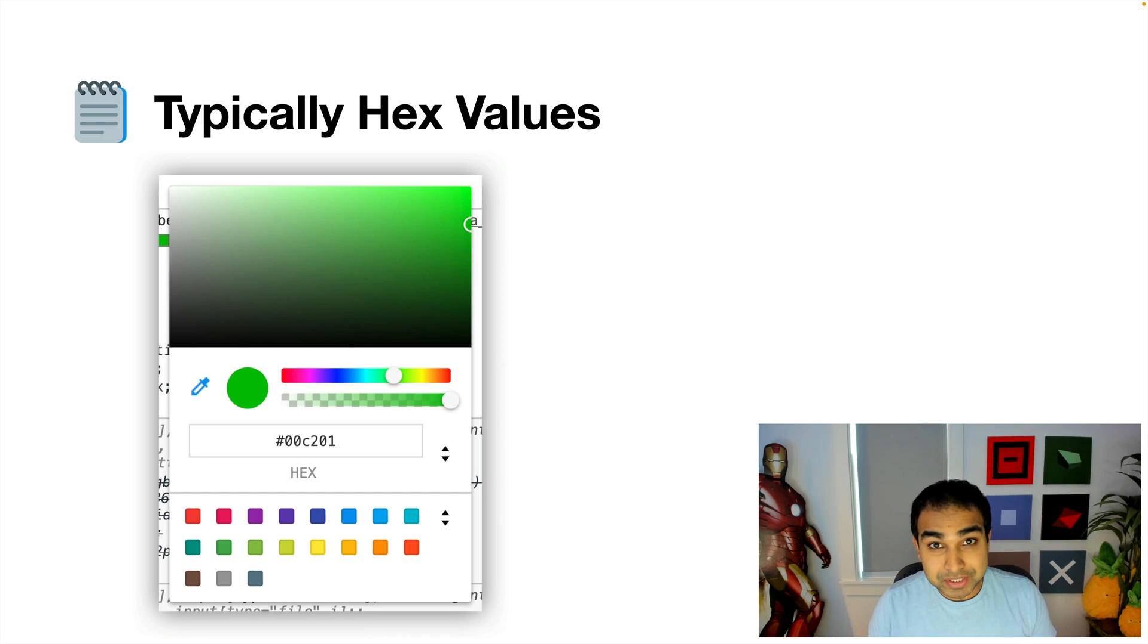When we think of colors, we typically think of them as hex values, where you can see something with a pound sign and some letters and numbers that are around six values together. Now, I don't know about you, but that doesn't really make a whole lot of sense to me. So for example, you can see that what I'm choosing is the color green and how it's represented in a way that our apps can typically understand is 00C201. Now, that's not the first thing I think about when I think of the color green.